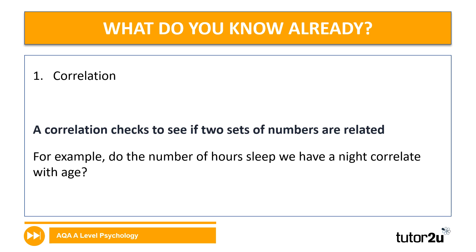I'll talk you through those terms — feel free to add anything into the booklet that you didn't get. A correlation is about assessing the relationship between two values, so to check if two numbers are related. Here's an example: do the number of hours sleep we have each night correlate with age? Or what is the relationship between hours of sleep and age?